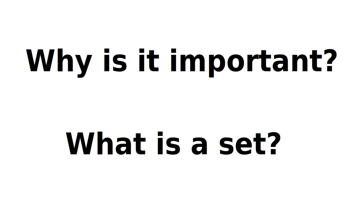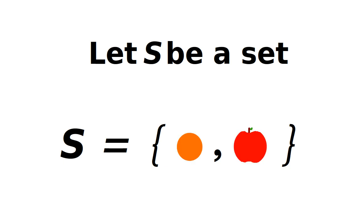What even is a set? A naive way to describe a set is that a set is a box which can contain a bunch of different objects. For instance, a box could contain an orange and an apple, and this would be described as a set containing an orange and an apple.